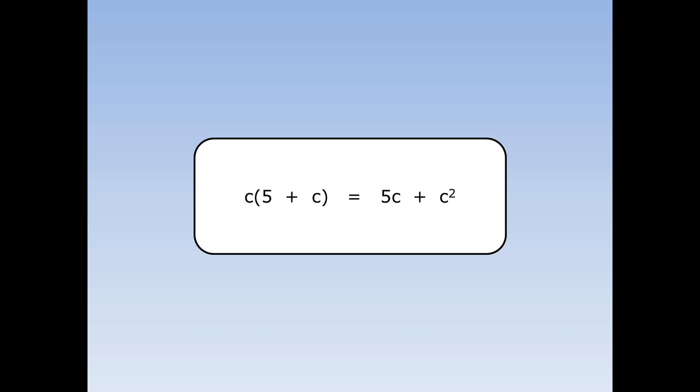When we multiply out c bracket 5 plus c, the answer is 5c plus c squared.